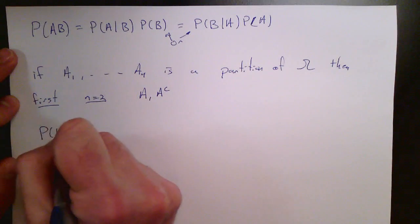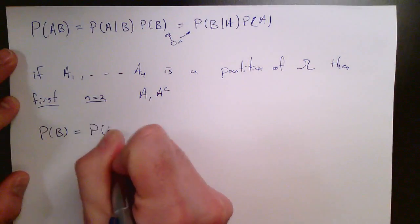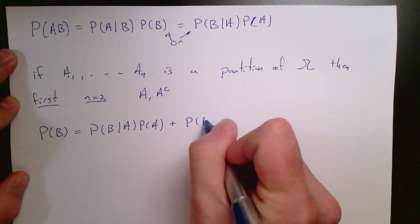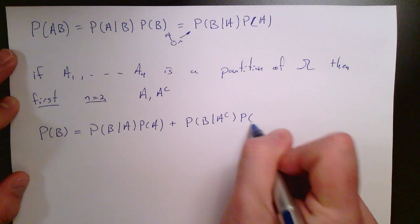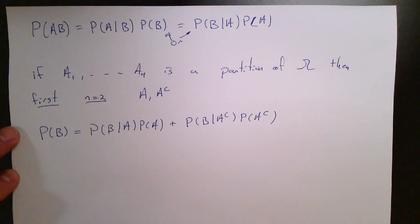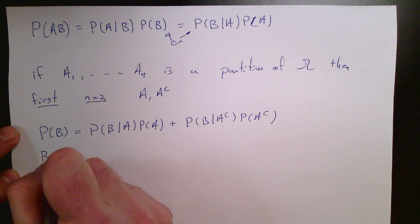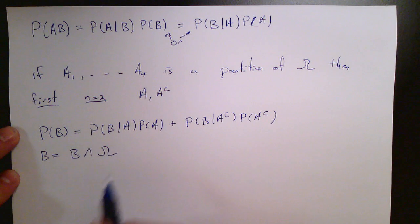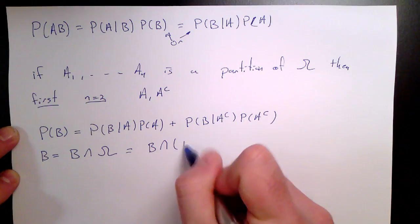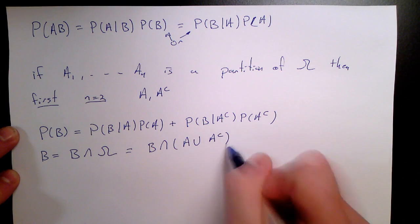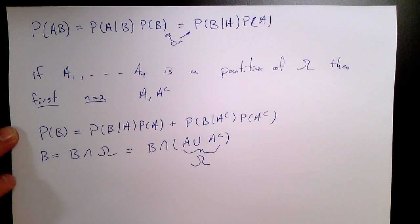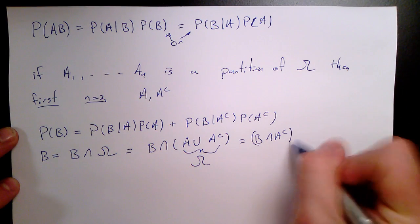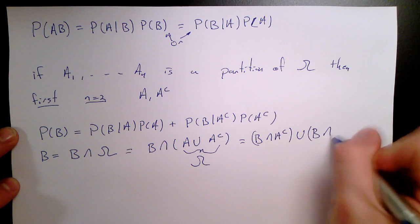Let's start with N equals 2. The partition would be A and A complement. Now we write the probability of B as the probability of B given A times the probability of A, plus the probability of B given A complement times the probability of A complement. We could have picked anything we wanted for A and A complement — it's just a useful technique to split up the probability of B by conditioning on some extra information. Here we quickly write down the proof of why this is true.